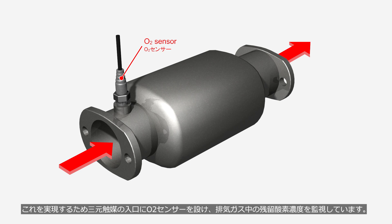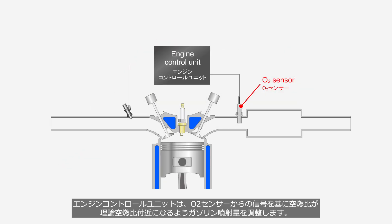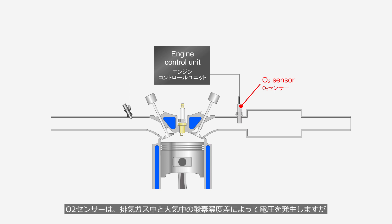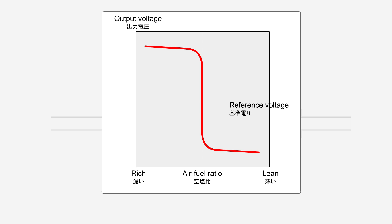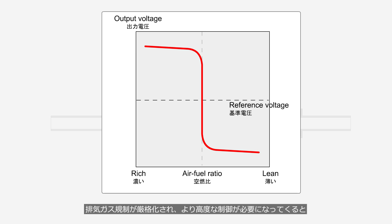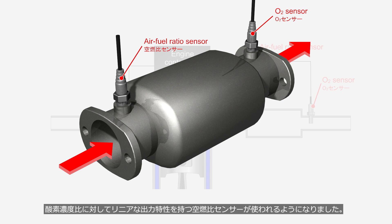To achieve this, an O2 sensor is installed at the inlet of the three-way catalyst to continuously monitor the residual oxygen concentration in the exhaust gases. The engine control unit adjusts the fuel injection amount to maintain the air-fuel ratio near the stoichiometric ratio based on the signal from the O2 sensor. The O2 sensor generates a voltage based on the difference in oxygen concentrations between the exhaust gases and the atmosphere, but it can only determine whether the air-fuel ratio is rich or lean. With the tightening of exhaust gas regulations, more advanced control became necessary, leading to the use of air-fuel ratio sensors with linear output characteristics in relation to the oxygen concentration ratio.